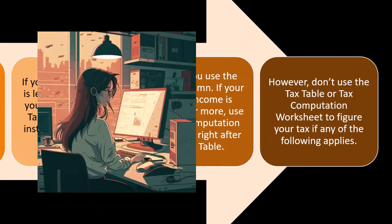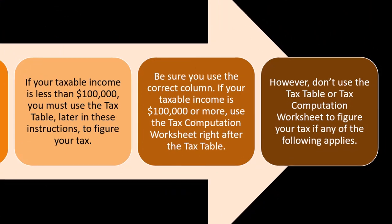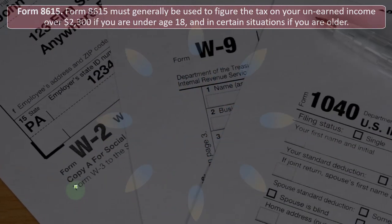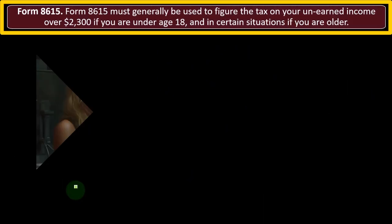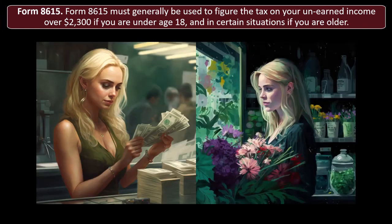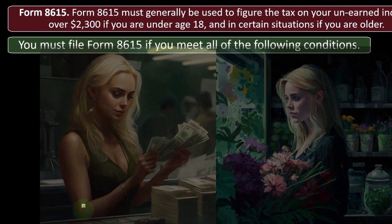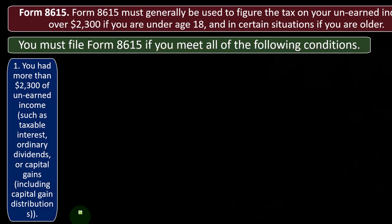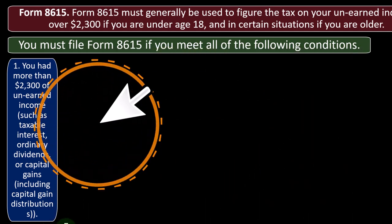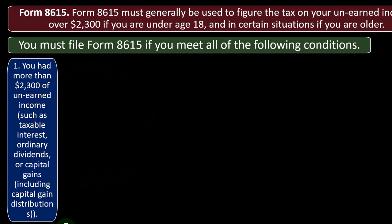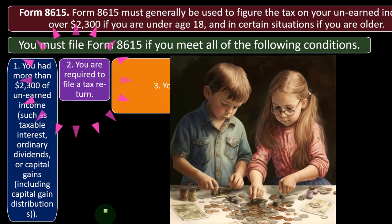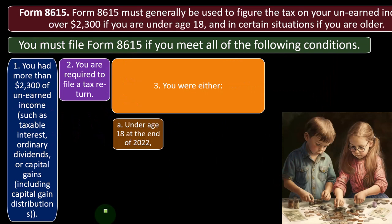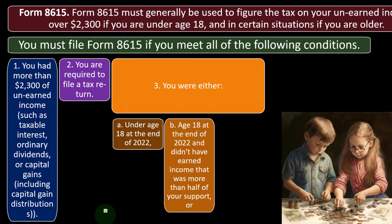Form 8615 must generally be used to figure the tax on unearned income over $2,300 if you are under age 18, and in certain situations if you are older. You must file Form 8615 if you meet all the following conditions: one, you had more than $2,300 of unearned income such as taxable interest, ordinary dividends, or capital gains including capital gain distributions; two, you are required to file a tax return.